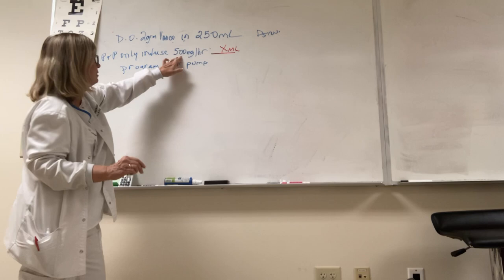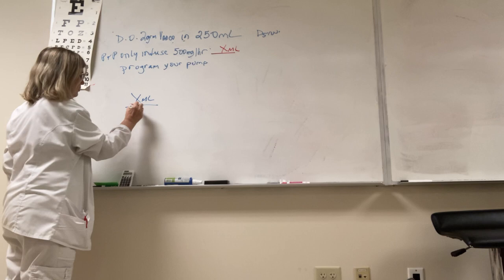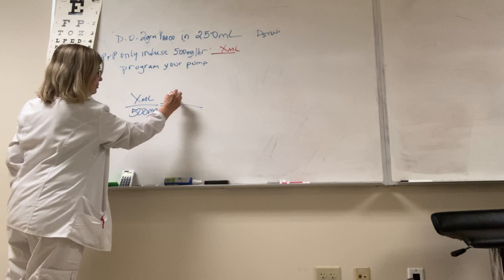So program your pump. Again, we don't know how many milliliters 500 mg per hour is, but so we make it X. X mLs is 500 mg.